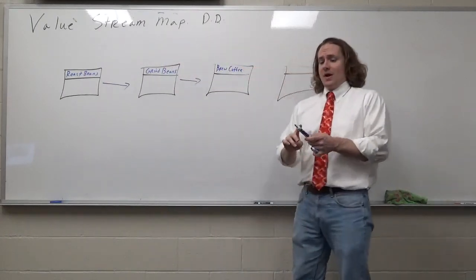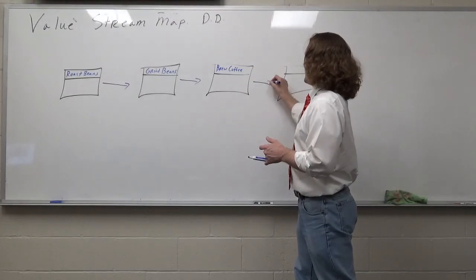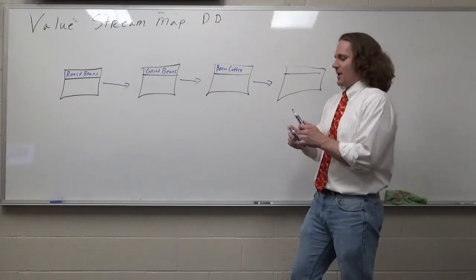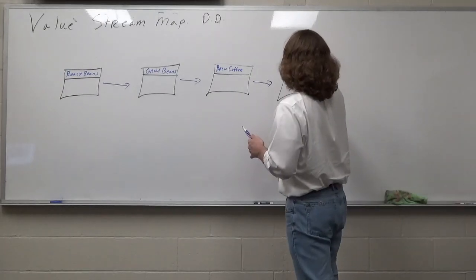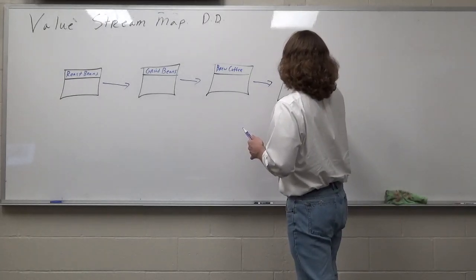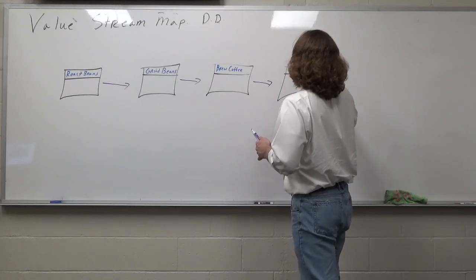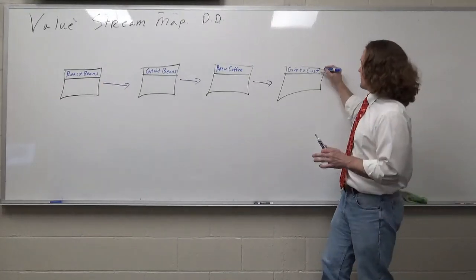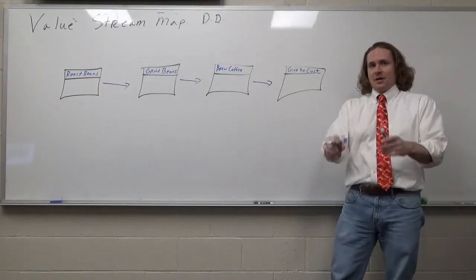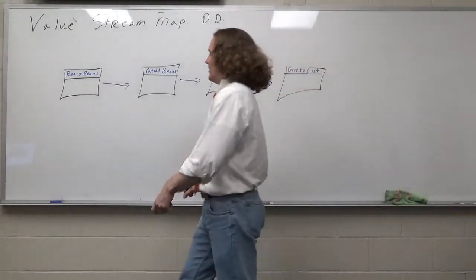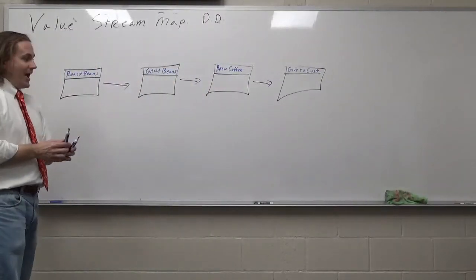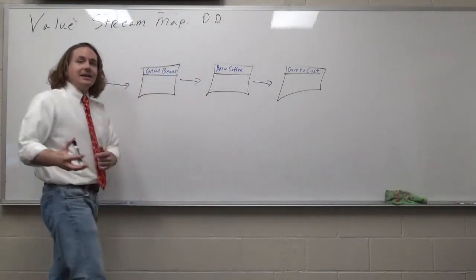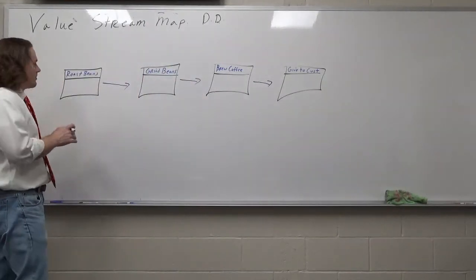Once again, we're going to take my purple marker because after we grind the beans, we're going to brew that coffee. And what do we do after we brew the coffee? We give it to customers. Brew coffee - all I've done is make an arrow because we're going to do it on the next process box here. Now what we're going to do after that is we're going to indicate our process metrics right below each step.